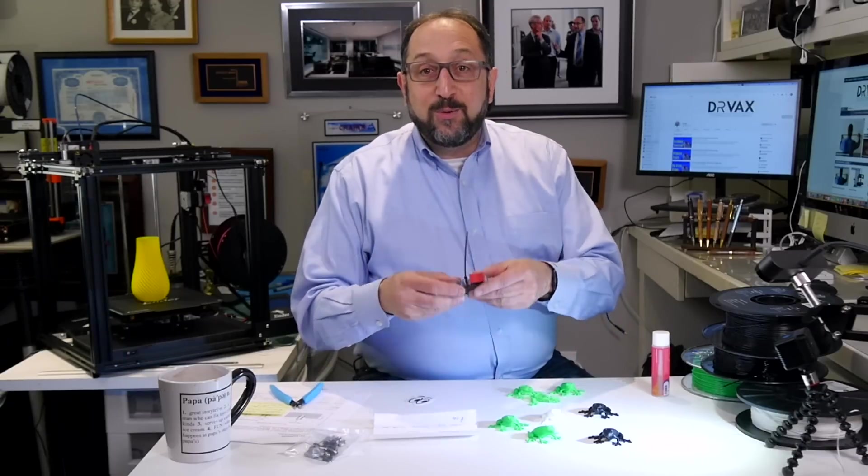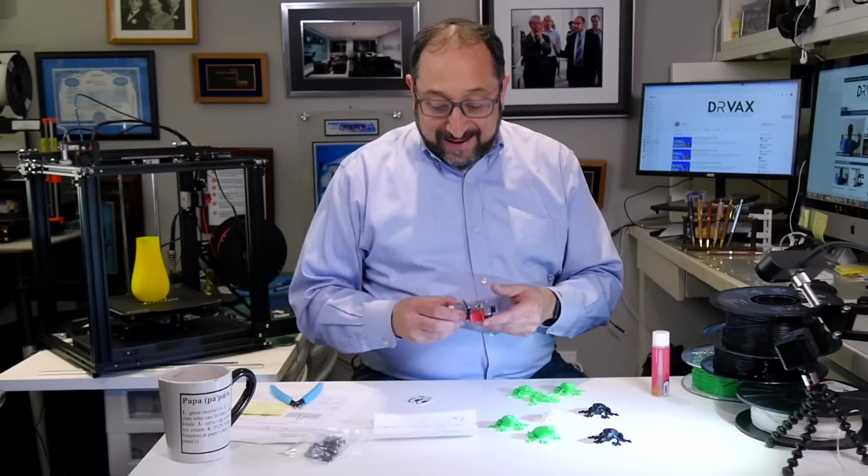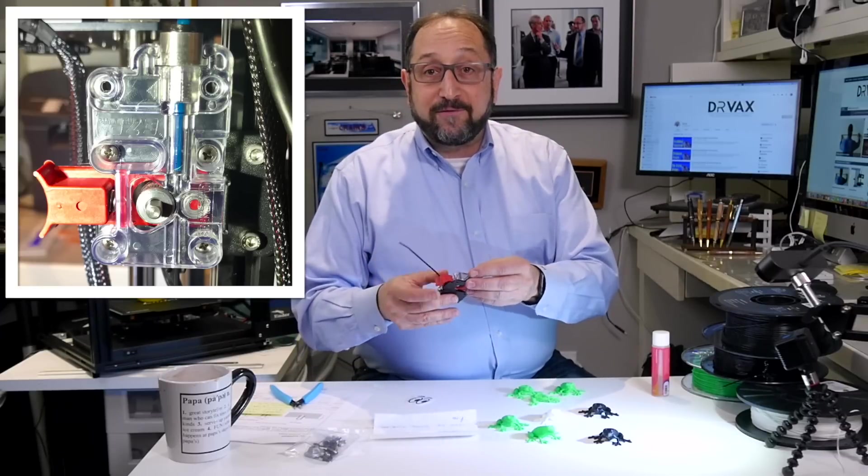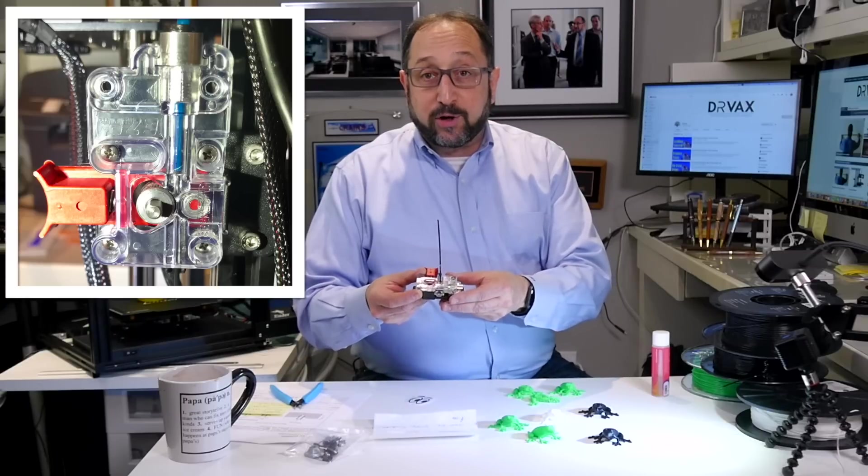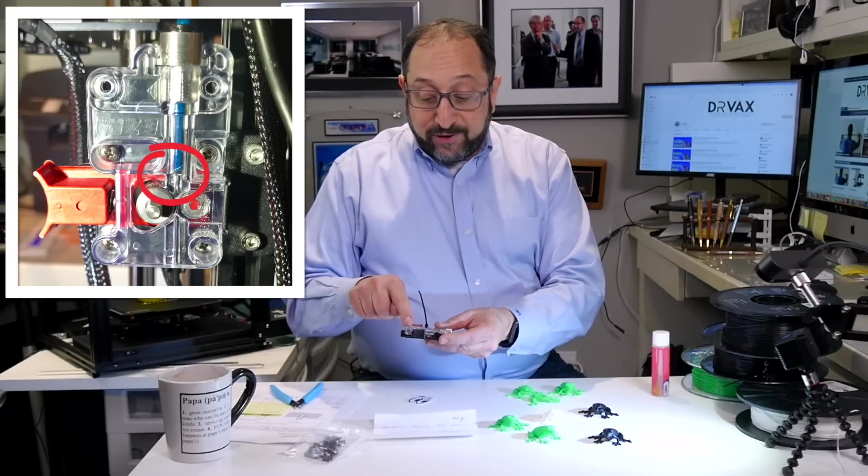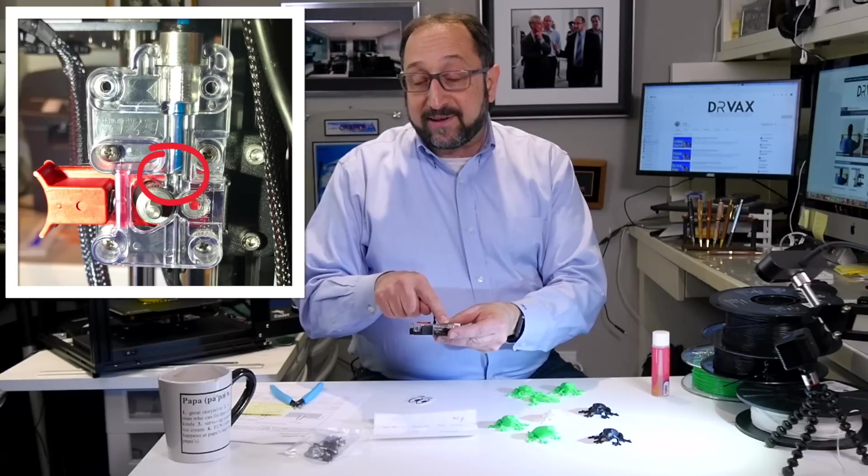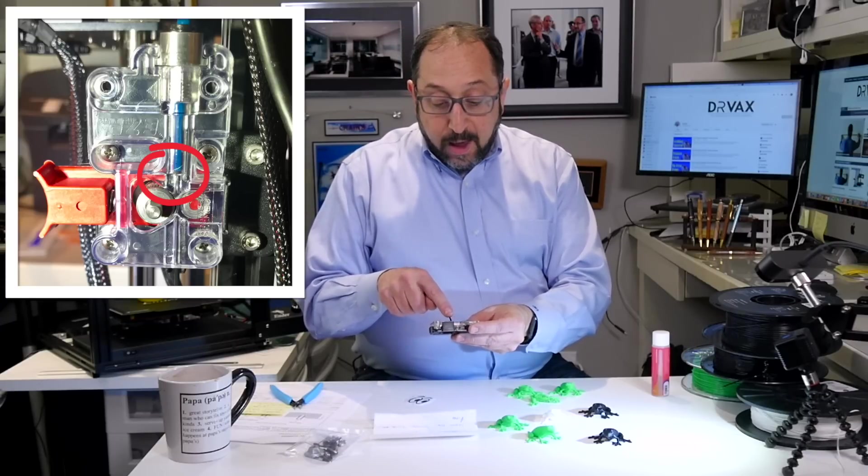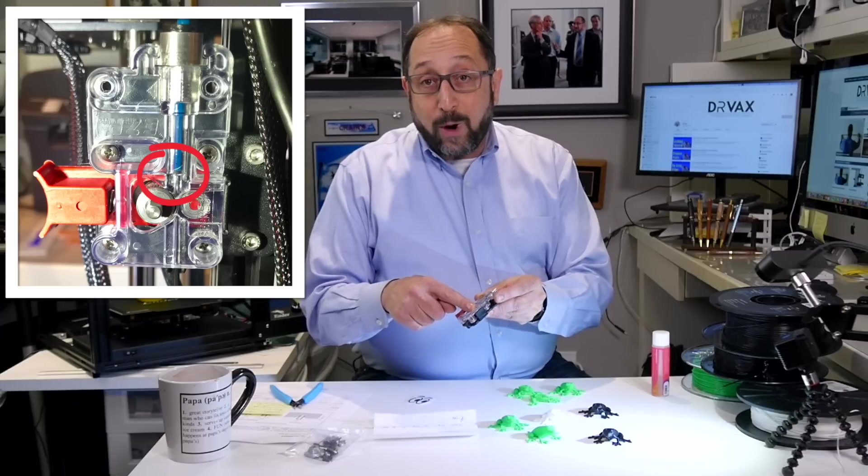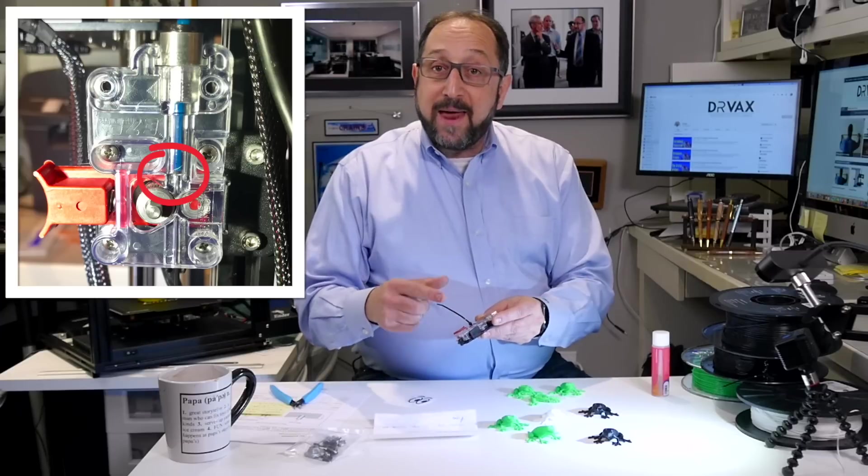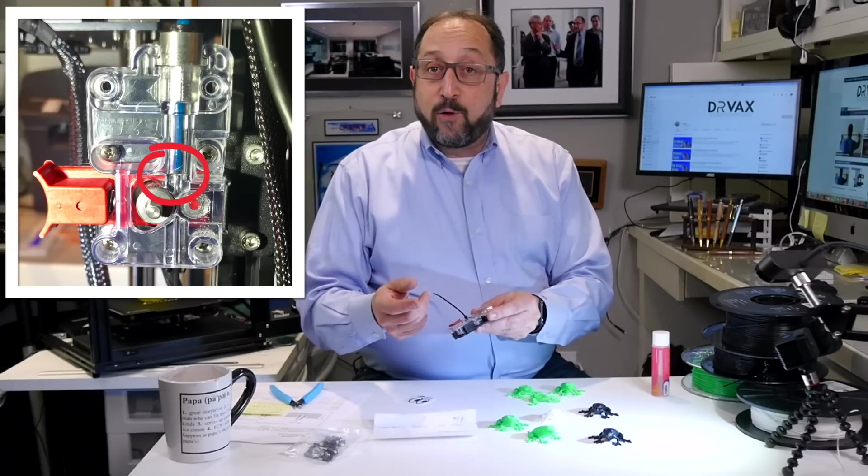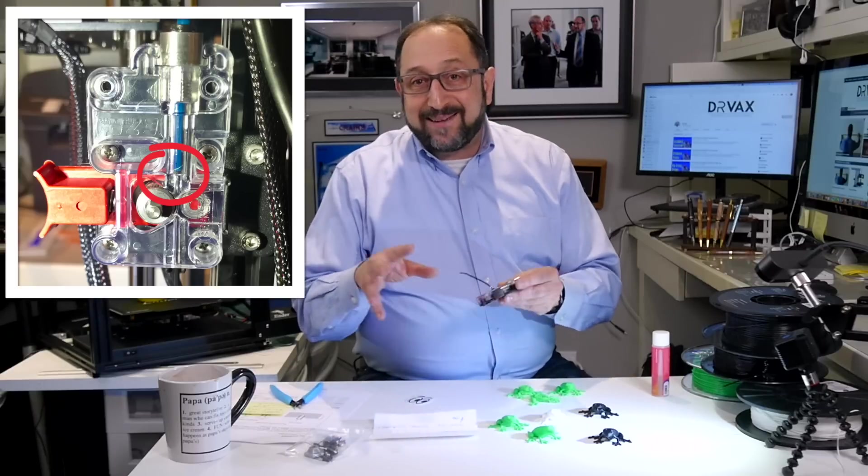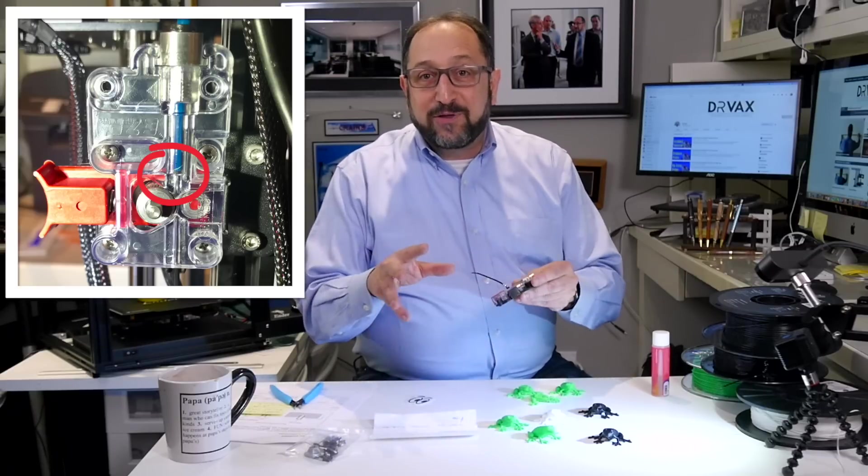Today we're going to install a CME CNC EZR extruder onto our Ender 5. This is a very interesting extruder. If you look at the picture in the corner, you'll see that the Bowden tube, in our case it's a Capricorn tube, the Bowden tube comes all the way down to the end of the extruder right by the gear. That means that there's very little space for a filament being fed into the extruder to go off the plantation, so to speak, out of the correct path.